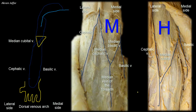Also on the roof of the cubital fossa there are cutaneous nerves. Among the nerves visible here is the medial cutaneous nerve of the forearm, which is a direct branch from the medial cord of the brachial plexus. On the lateral side, there is the lateral cutaneous nerve of the forearm, which is the continuation of the musculocutaneous nerve.